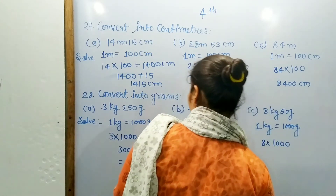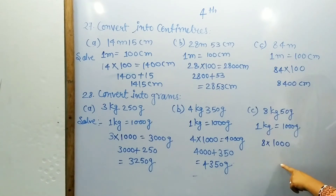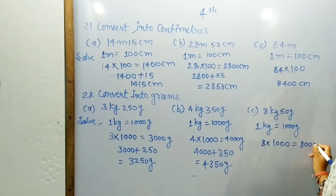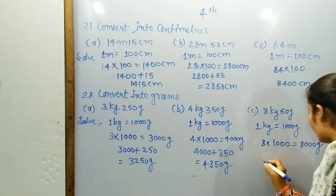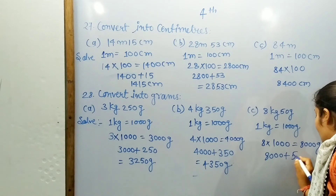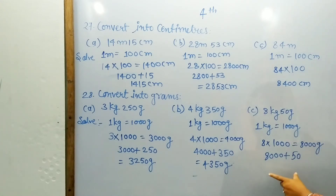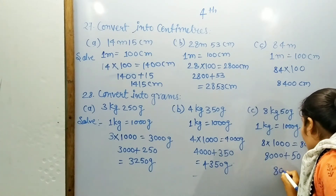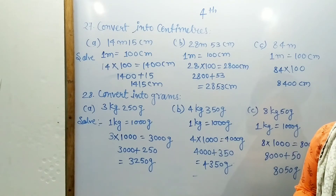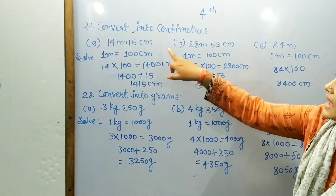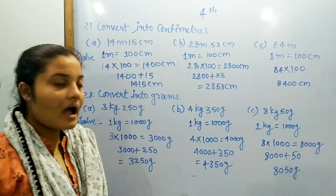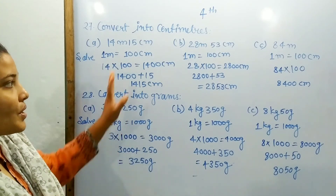1000 is equal to 8000 grams. Okay? Then we have 8000 plus 50. Then we have 8050 grams. Okay? Then we have to measure each gram — so these are all converted, giving us 8050 grams. So we have to complete this paragraph.